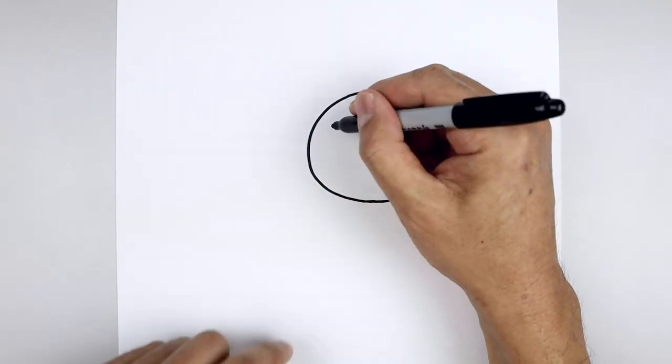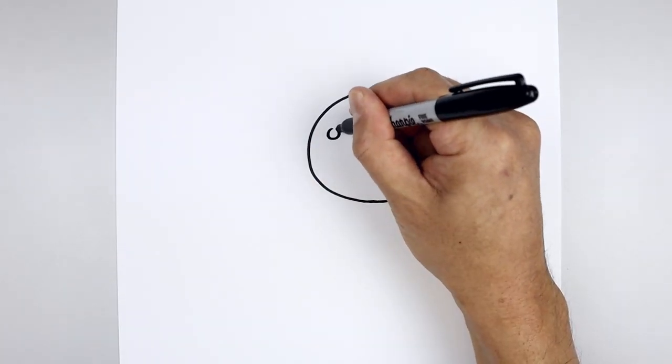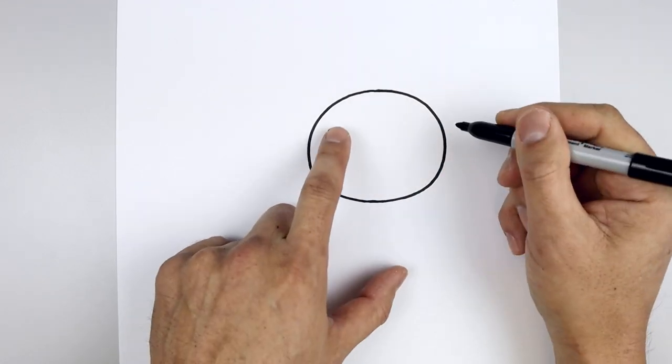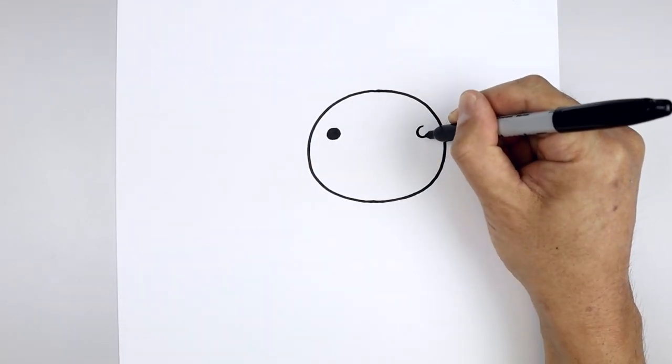Let's add two black dots on either side. Starting on the left, draw a circle and fill that in. Line this up on the right side and do the same thing.